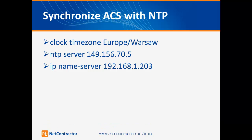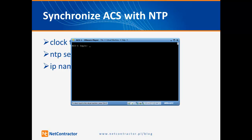Here are three commands that need to be configured from the ACS command line. First, you have to specify the time zone — the structure uses the 'clock timezone' command followed by the continent/city format. The second command configures the NTP server using 'ntp server' and the NTP server IP address. The last command configures the DNS server. Let's open the ACS command line and log on.